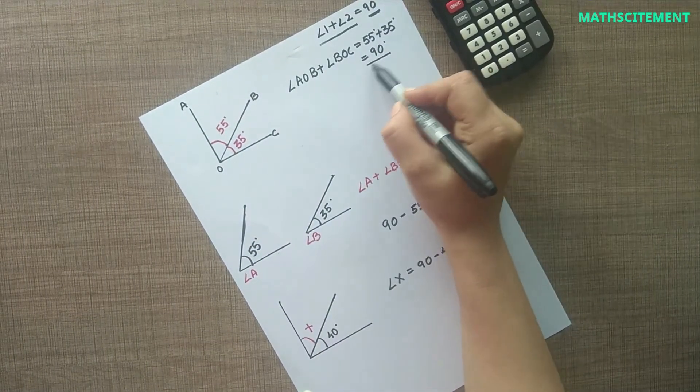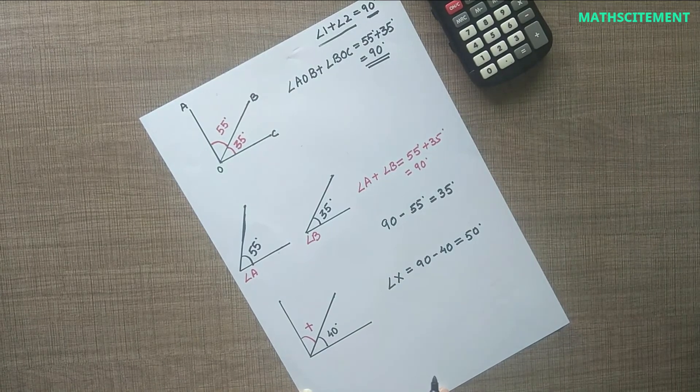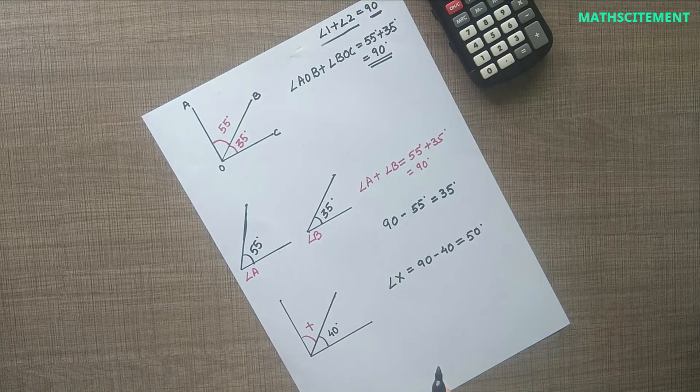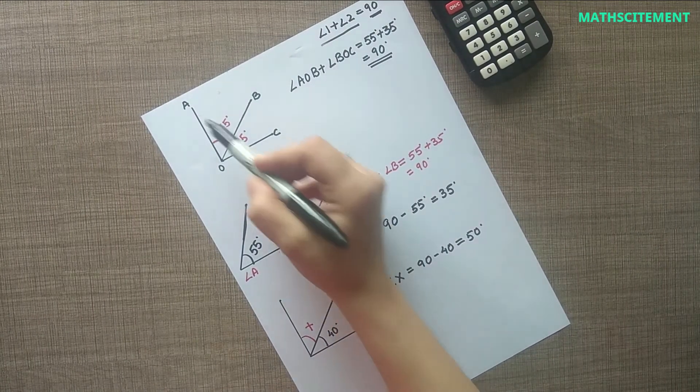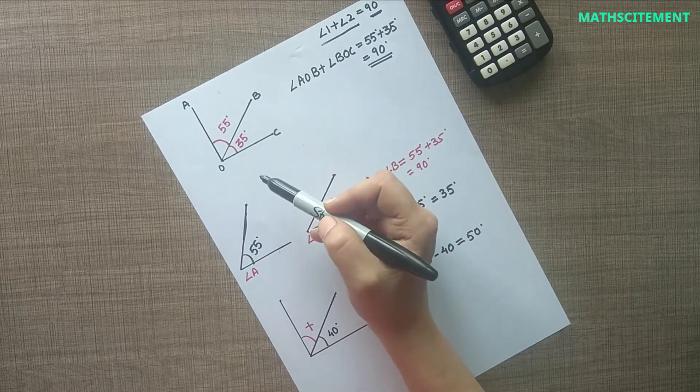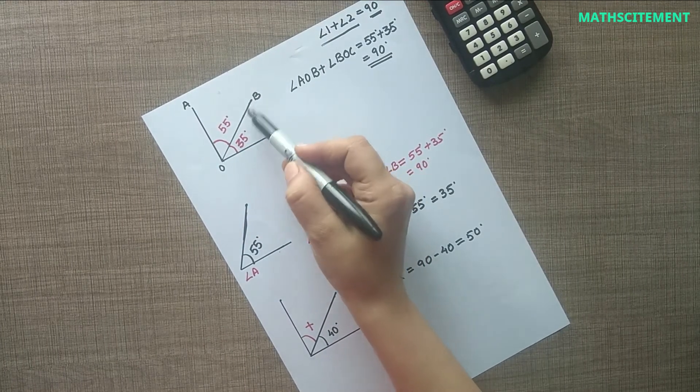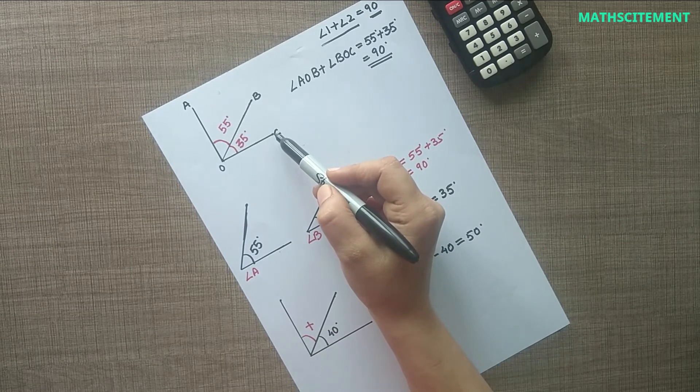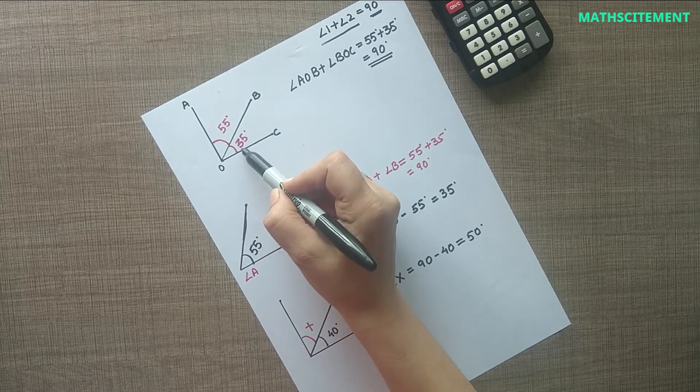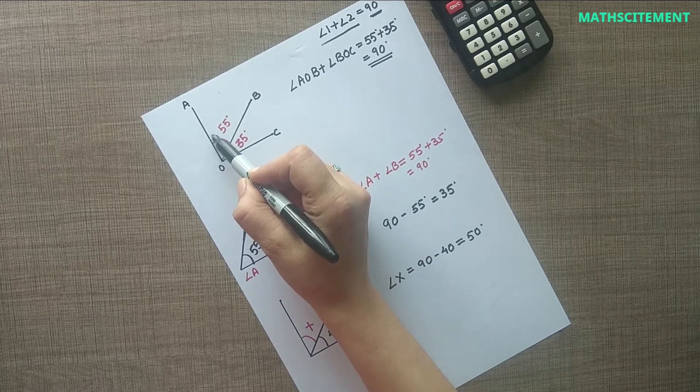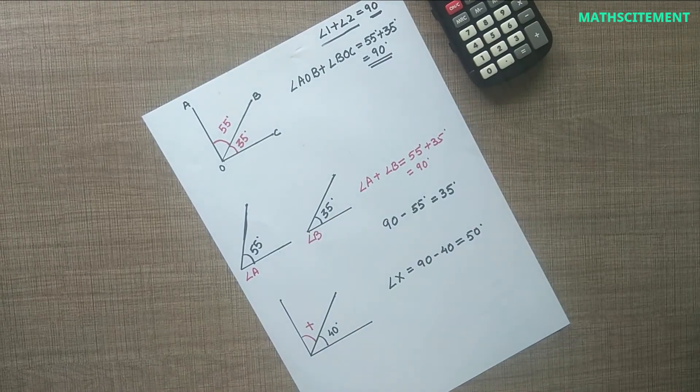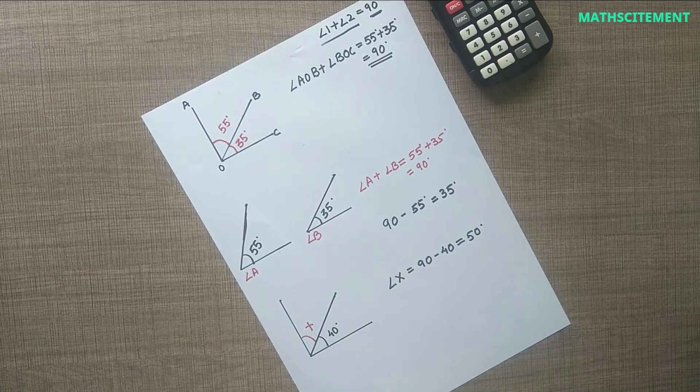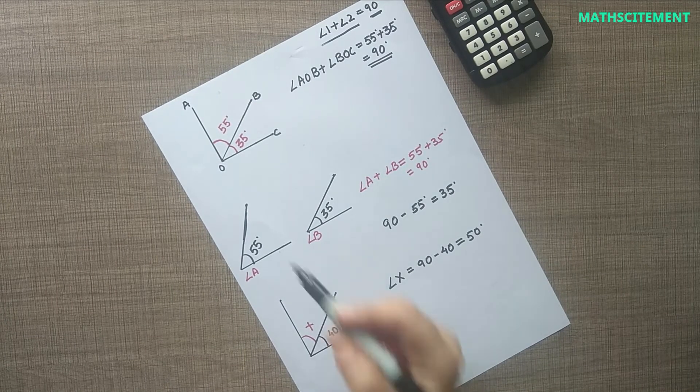We can also say that angle AOB is the complement of angle BOC and angle BOC is the complement of angle AOB. Such a pair of complementary angles together form a right angle.